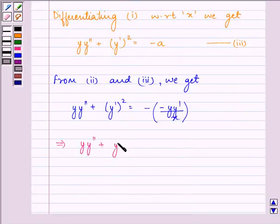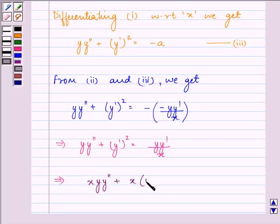Now, taking x from the right-hand side to the left-hand side, we have our final answer as x·yy'' + x(y')² = yy'.